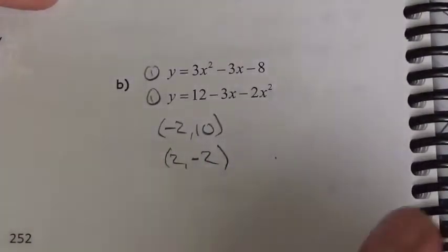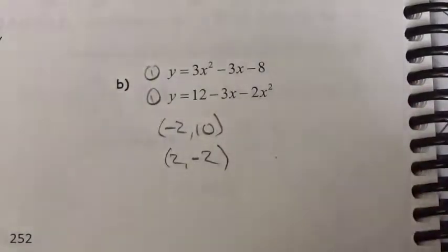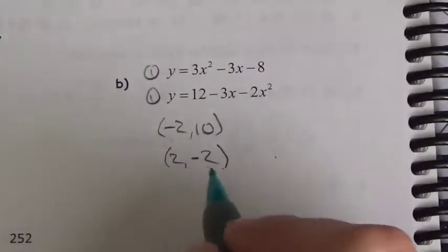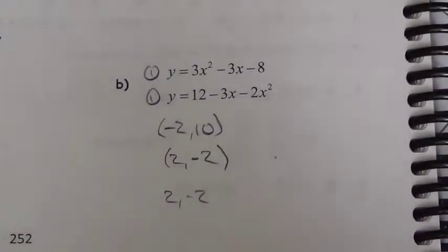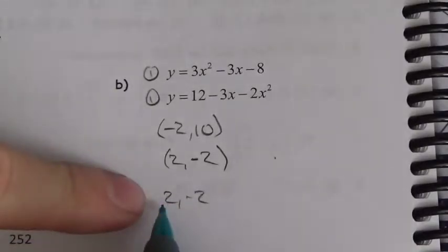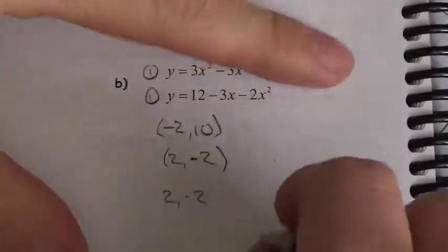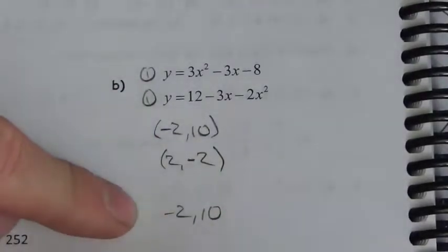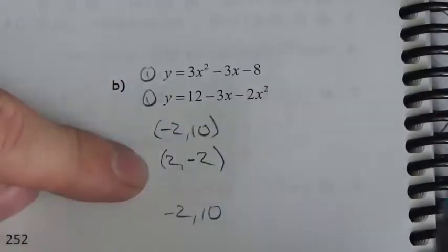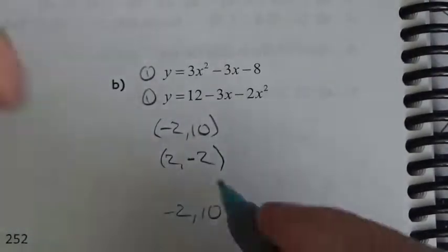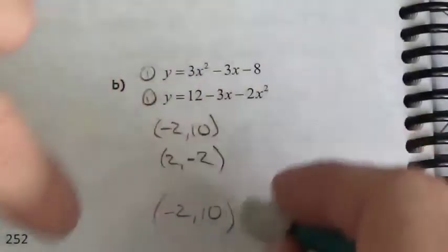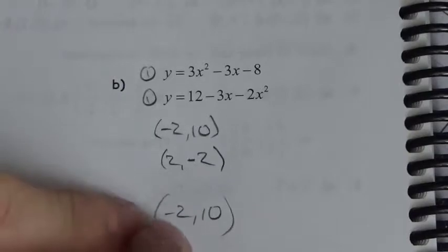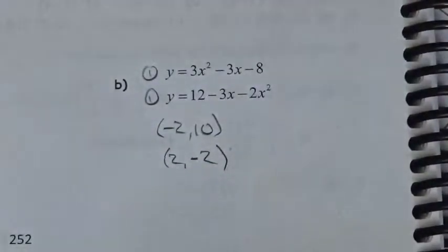When you write the solutions, you need to write them as ordered pairs. We are finding both an x and a y coordinate. If you don't put the parentheses in, I don't know what you're referring to. For example, if you wrote negative 2, 10 without parentheses, those could be two different x values. As soon as you put parentheses around it, I look at that and say — oh, x, y, I get it. Without those parentheses, you're just listing numbers.